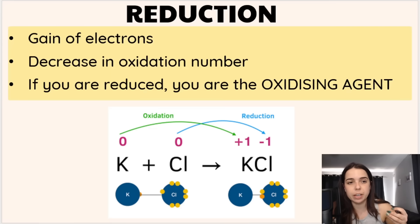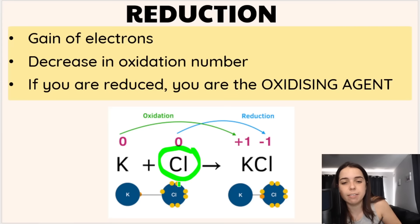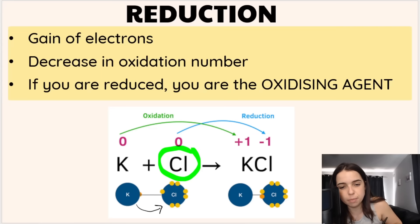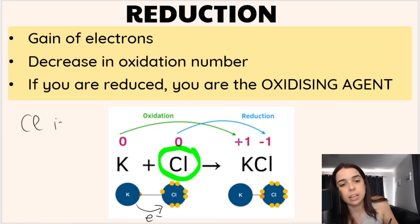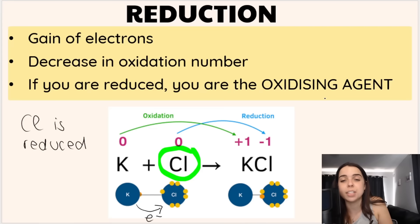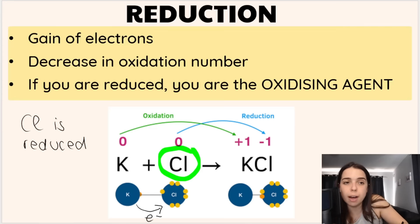Looking at the reduction side: chlorine had seven valence electrons and gained an electron from potassium — the electron goes to chlorine. Because chlorine gains electrons, we say chlorine is reduced, and therefore chlorine is the oxidizing agent. If you gain negative things — electrons — you become more negative, so the oxidation number goes from zero to negative one. It all fits together.